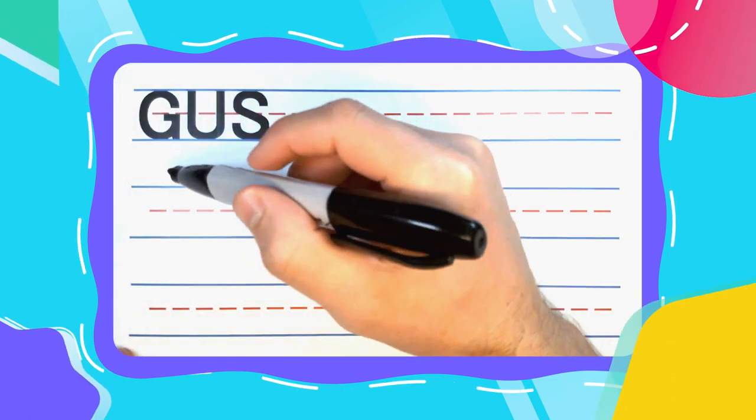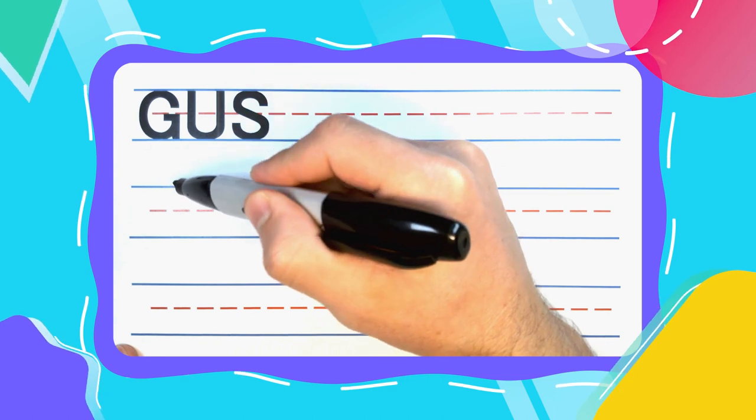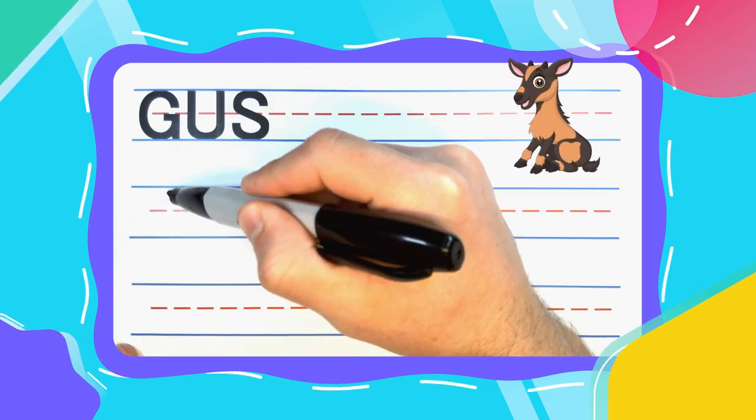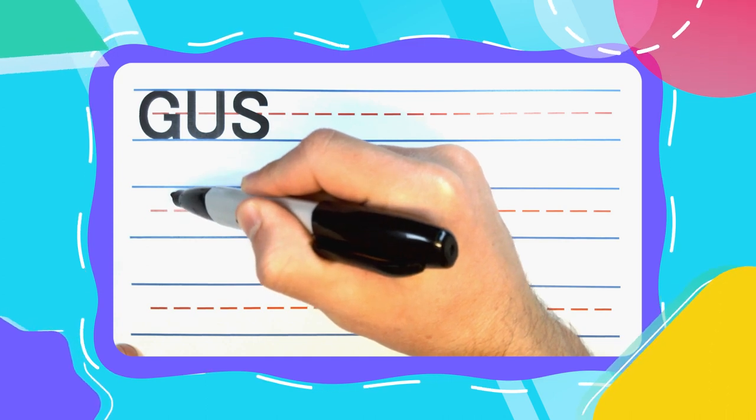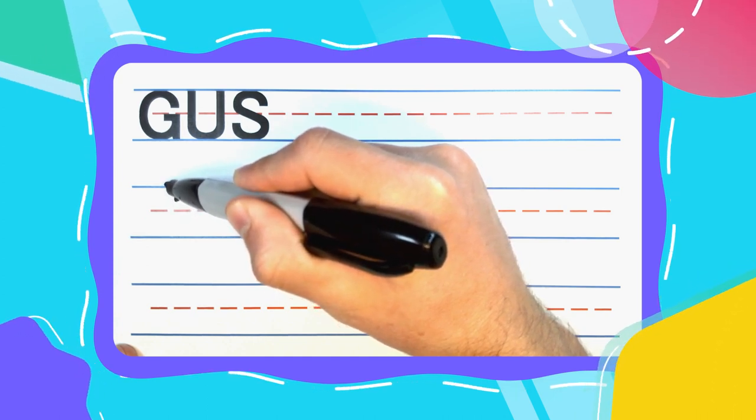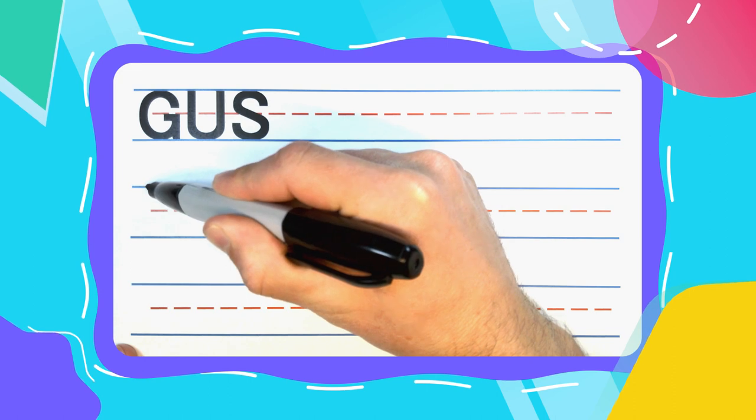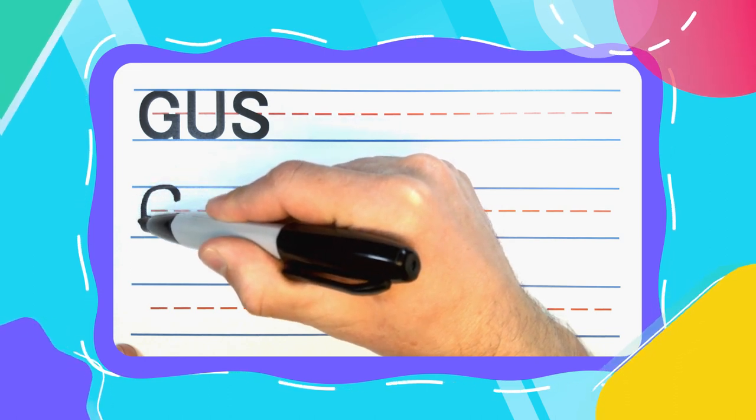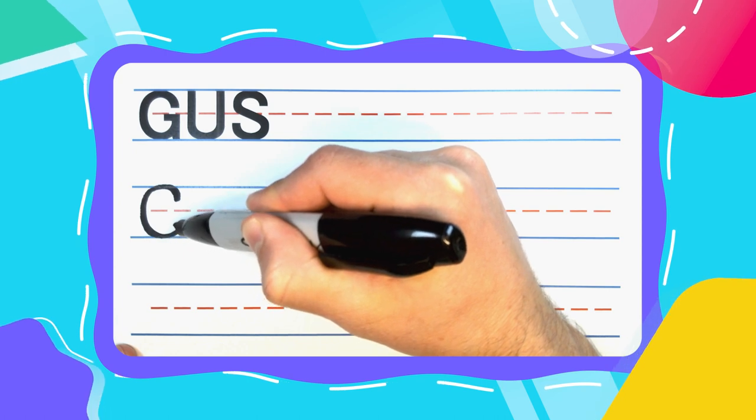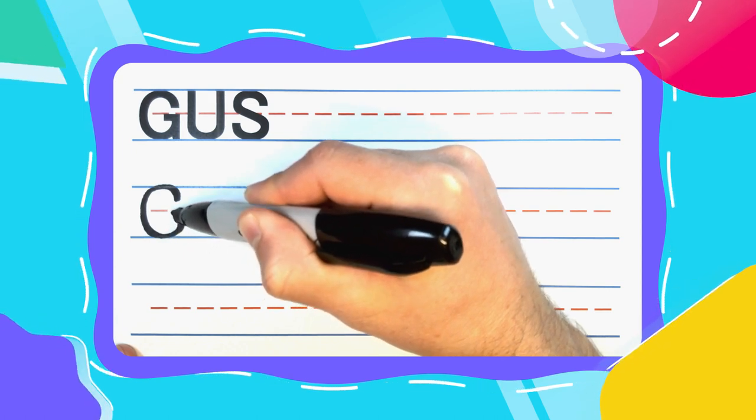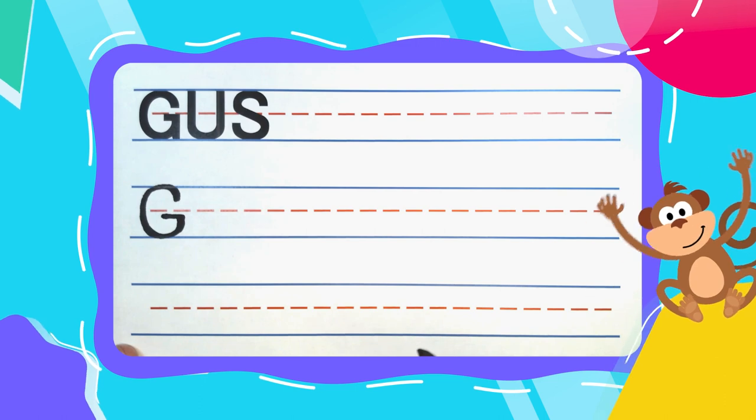Now let's get started. The first letter in Gus is the good old GOAT G. And GOAT G's start just below that top line. You're going to come up and then curve to the left. Touch the top and keep curving all the way around to the bottom. Touch the bottom, come up and right before you get to the middle, hook into the left to complete your GOAT G.